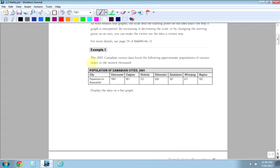So here we have, in 2001, the Canadian census data was listed, and the following approximate populations of various cities. They have Vancouver, Calgary, Victoria, Edmonton, Saskatoon, Winnipeg, Regina. They don't have Kamloops on here. I want to add Kamloops because it's never added. So we have the cities there along the top and the population in thousands.